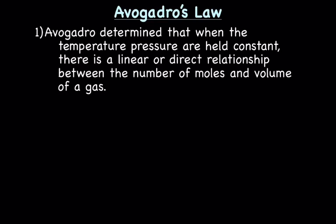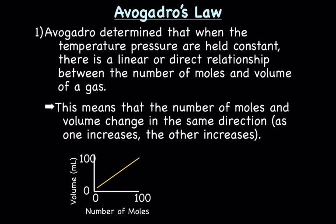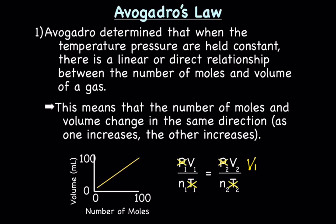The last simple gas law is Avogadro's Law. Avogadro is interested in moles — he determined that when temperature and pressure are held constant, there is a linear relationship between the number of moles and the volume of a gas. As one increases the other increases. When pressure and temperature are held constant you can use V1/N1 = V2/N2.